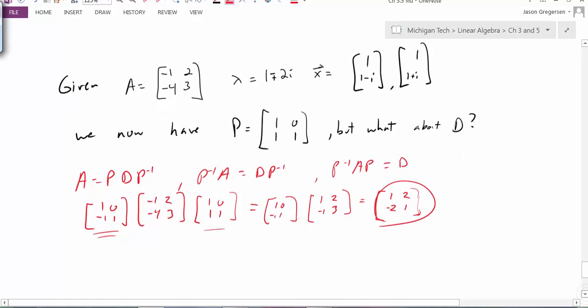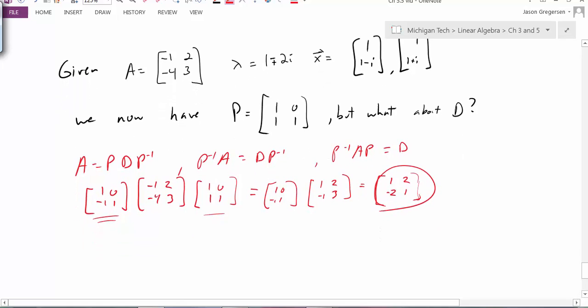And this here would be my matrix D. But actually, in this case, it's not a diagonal matrix. So I'm going to give it a new name, not marked by D. In fact, I'm going to call it C this time. So it looks like A is really equal to P times the similar matrix C times P inverse.